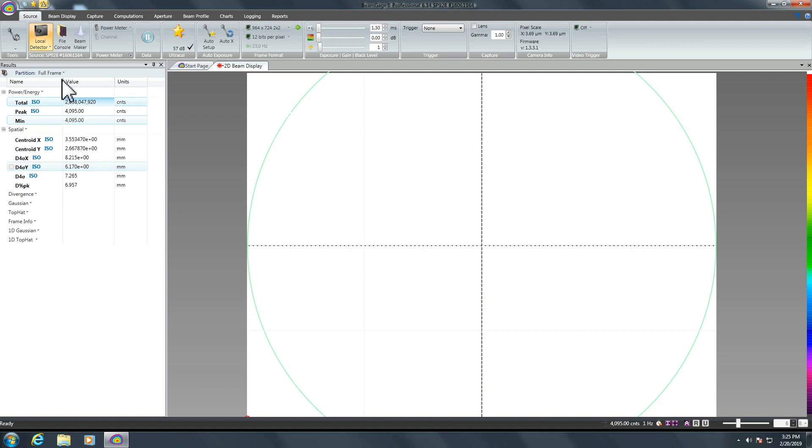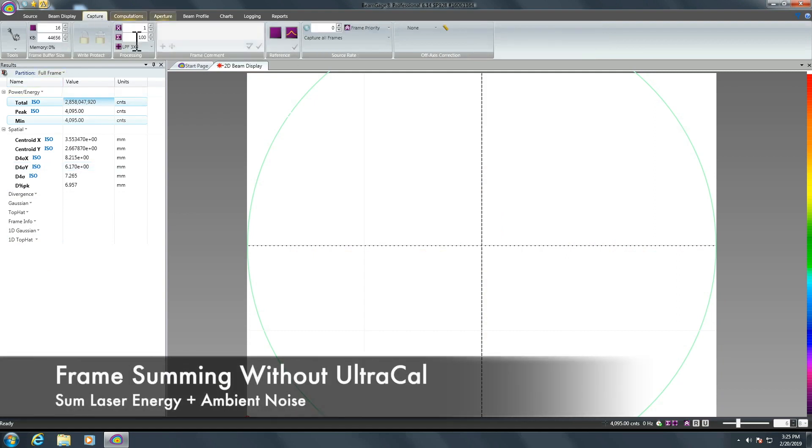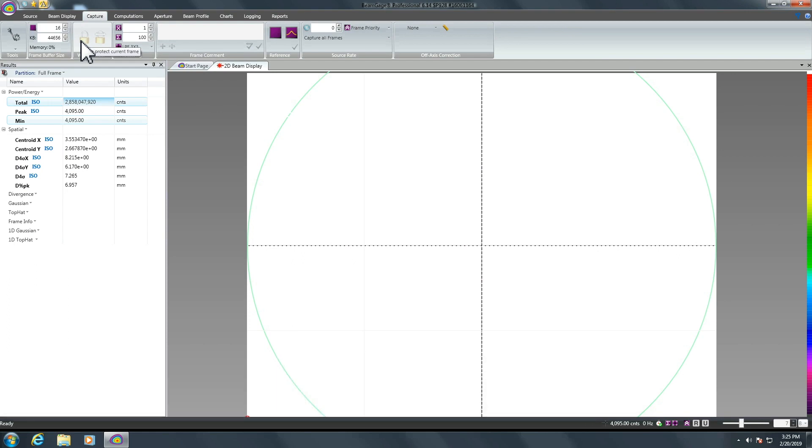When we sum 100 frames without UltraCal, we are summing the laser energy and system noise. We see an image saturated to the point that no beam measurements are possible.